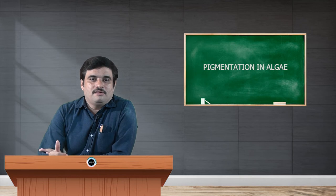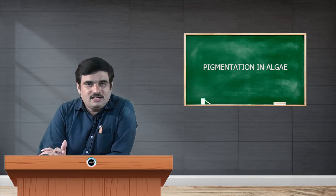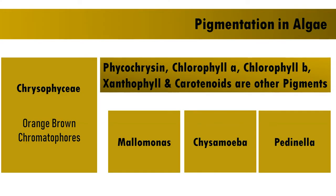The third class, Chrysophyceae, has pigments in orange-brown chromatophores — you can observe that in the slide as well, where similar color combinations are used to help you remember. Chrysophyceae is characterized by phycocrycin, a type of phycobilin pigment, along with chlorophyll a, chlorophyll b, xanthophyll, and carotenoids. Examples are Mallomonas, Chrysophyceae, and Pedinella.